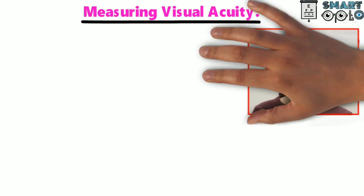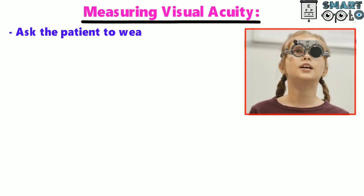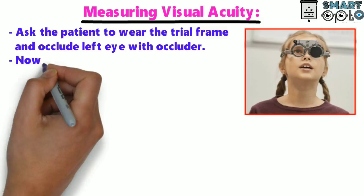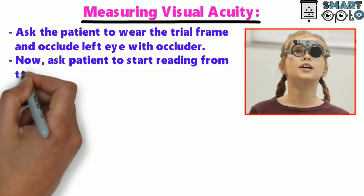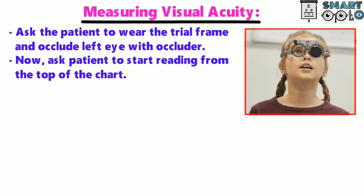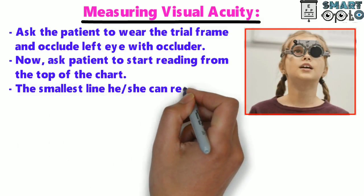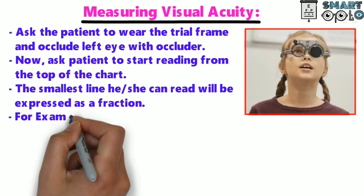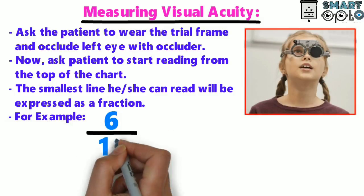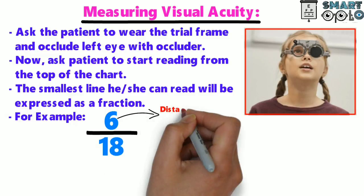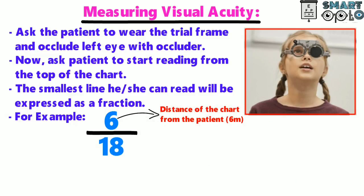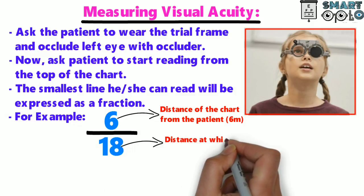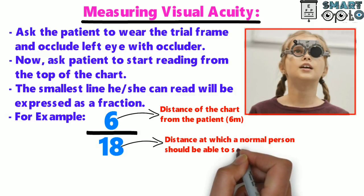Measuring visual acuity: Ask the patient to wear the trial frame and occlude the left eye with an occluder. Ask the patient to start reading from the top of the chart. The smallest line he or she can read will be expressed as a fraction — for example, 6/18. This 6 represents the distance of the chart from the patient, that is 6 meters, and 18 represents the distance at which a normal person should be able to see that line.